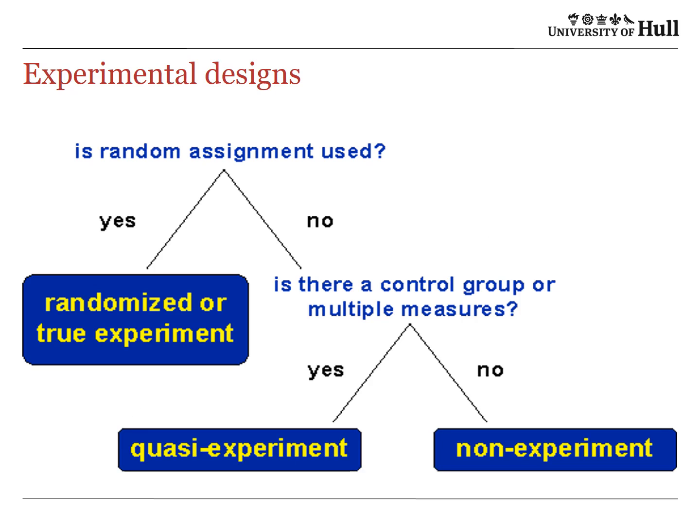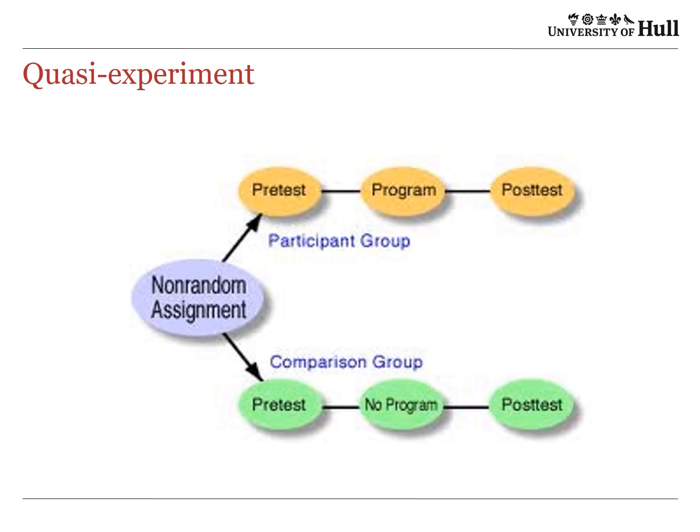We can ask ourselves if a design is an experiment or not. If random assignment is used, then yes, it's a randomised or true experiment. If not, we ask: is there a control group or multiple measures? If so, it's a quasi-experiment; if not, it's a non-experiment. For example, a quasi-experiment would be non-random assignment into two groups, then measuring an outcome after some sort of intervention.